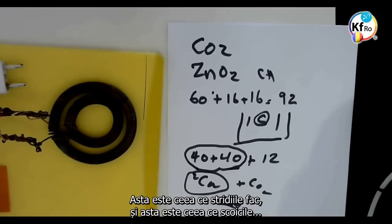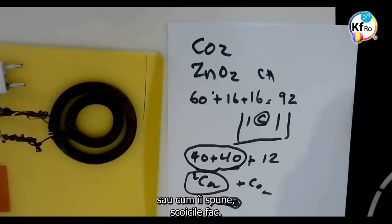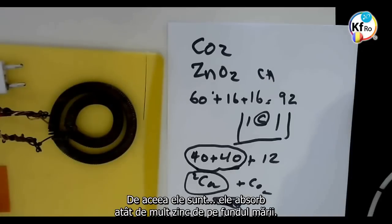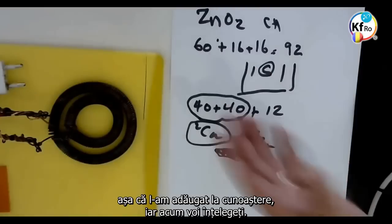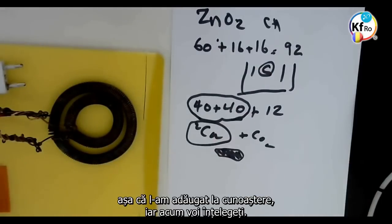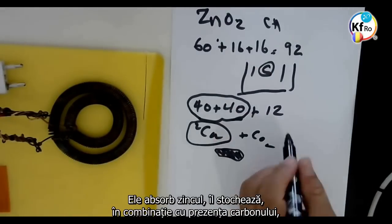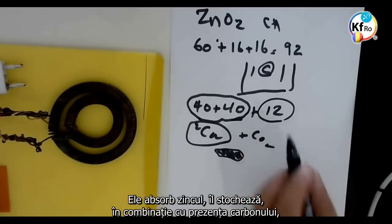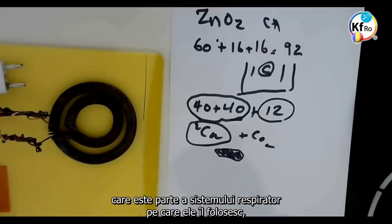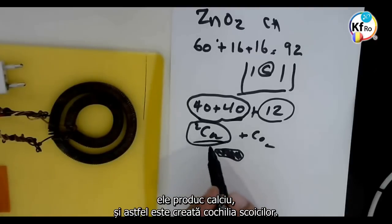This is what the oyster does, this is what the sea fish, sea shellfish do. That's why they absorb so much Zinc from the bottom of the sea, because they go through the same process. It's never been understood, so we add to the knowledge. They absorb the Zinc, they store the Zinc, in combination with the presence of the carbon, which is part of their breathing system. They produce Calcium, and that's how the shell of the sea shellfish are created.